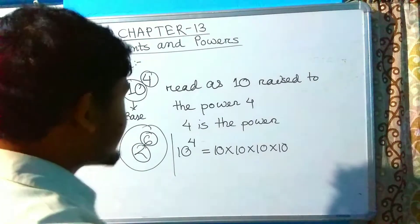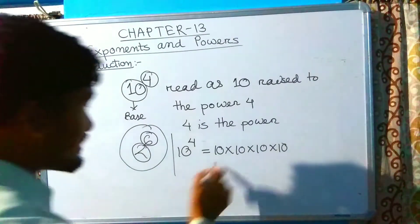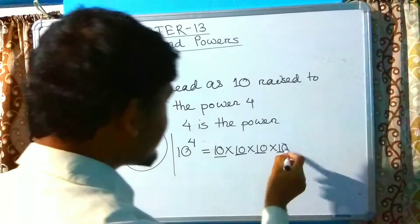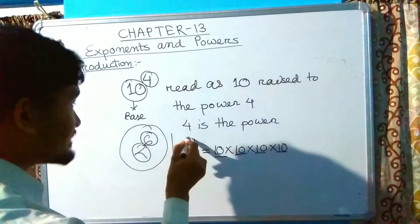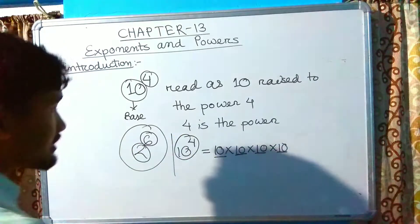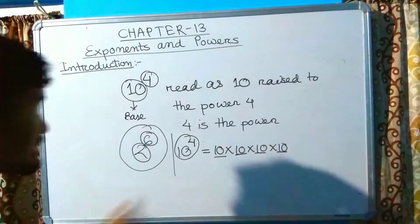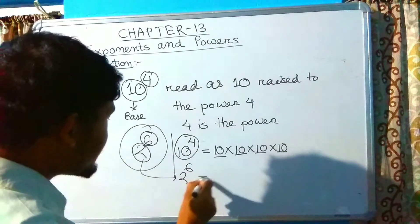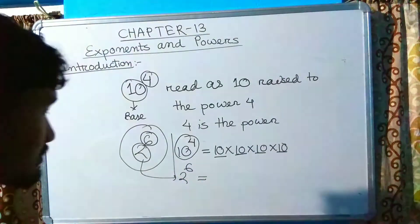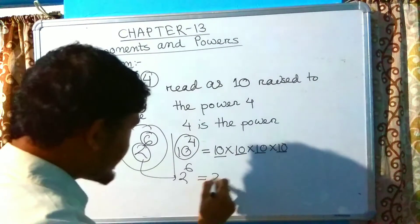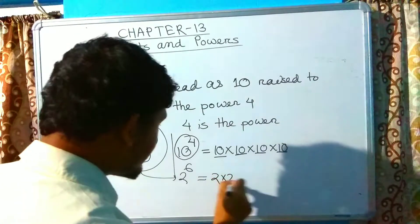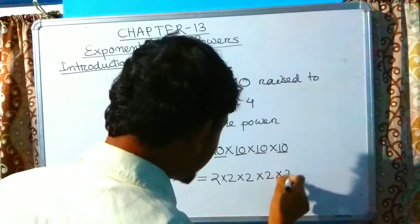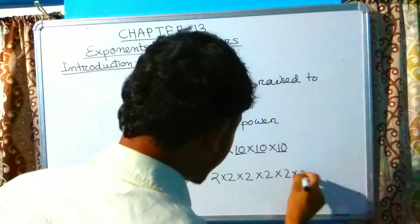Similarly, 2 raised to the power 6 can be written as 2 multiplied by 2, multiplied by 2, multiplied by 2, multiplied by 2, multiplied by 2 — the number 2 appears 6 times.